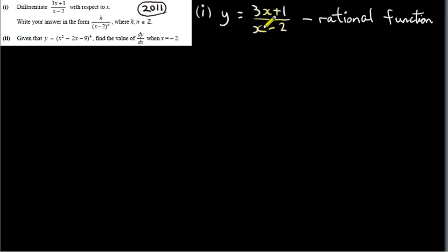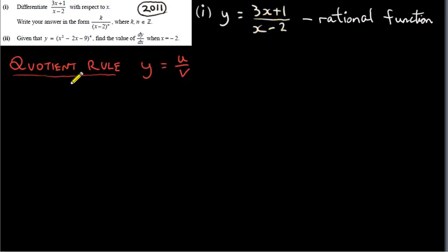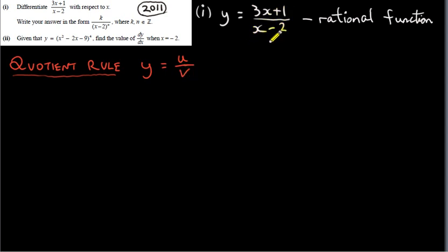To differentiate this we use the quotient rule. A quotient is just another word for a fraction. For the quotient rule, our function has the form y equals u over v, where u is some function of x. In this case u equals 3x plus 1, and v is another function of x — v equals x minus 2.